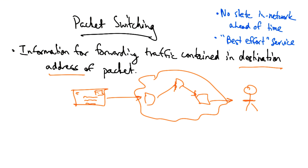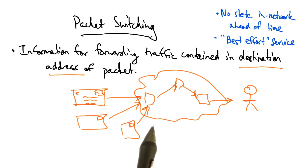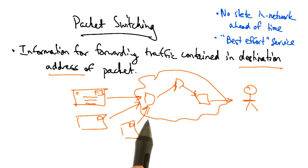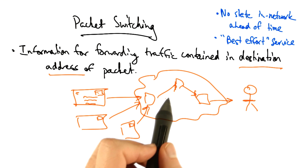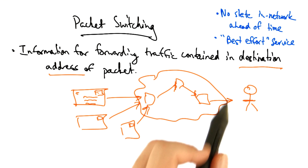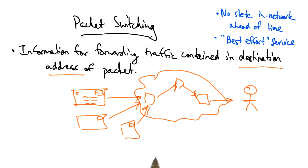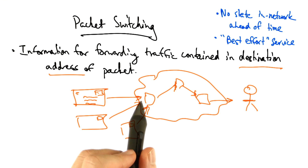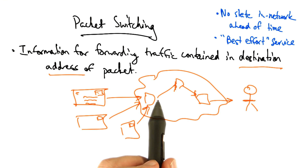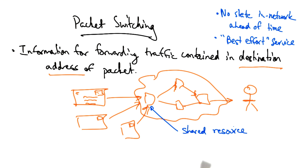So how does packet switching enable sharing? Just as if you were sending a letter, many senders can send over the same network at the same time, effectively sharing the resources in the network. A similar phenomenon occurs in packet switching, when multiple senders send network traffic or packets over the same set of shared network links.